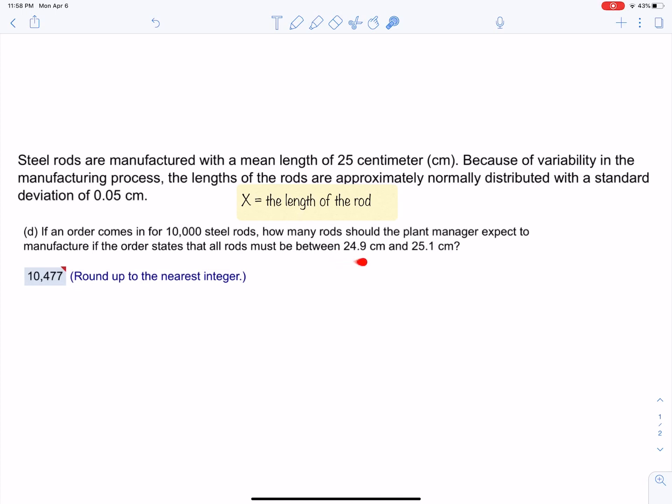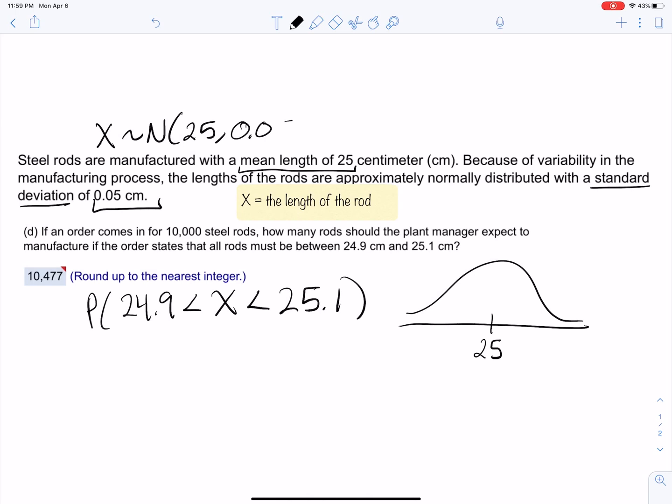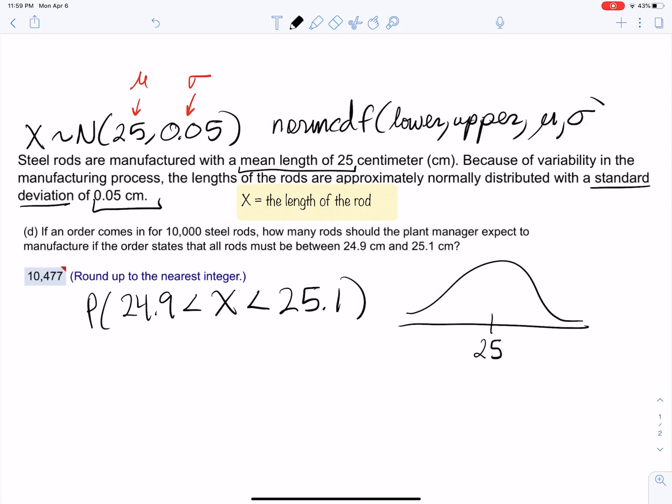First we need to find out what proportion of the rods will be accepted - only ones within this range. So we can find the probability that the length of the rod is within that range. We can draw a picture with 25 in the middle. X, the length of the rod, is normally distributed with mean 25 and standard deviation 0.05. We know that normalcdf works with the following inputs. We can draw a couple lines to show what we're looking for: 24.9 and 25.1. So that's the area which equals the probability that a rod would be accepted.